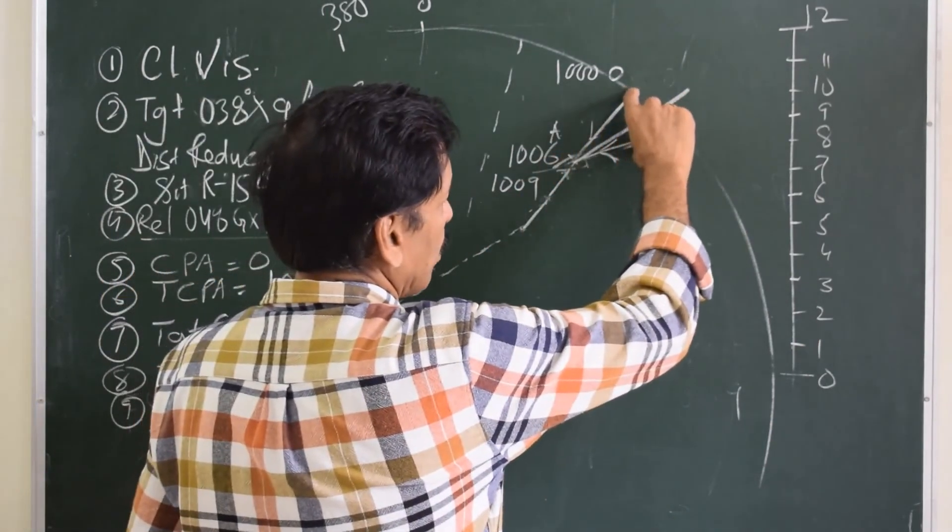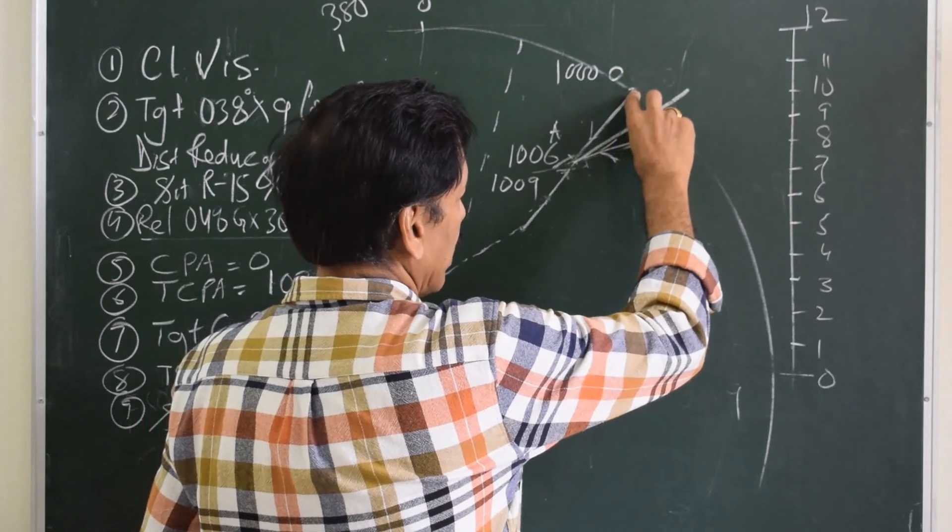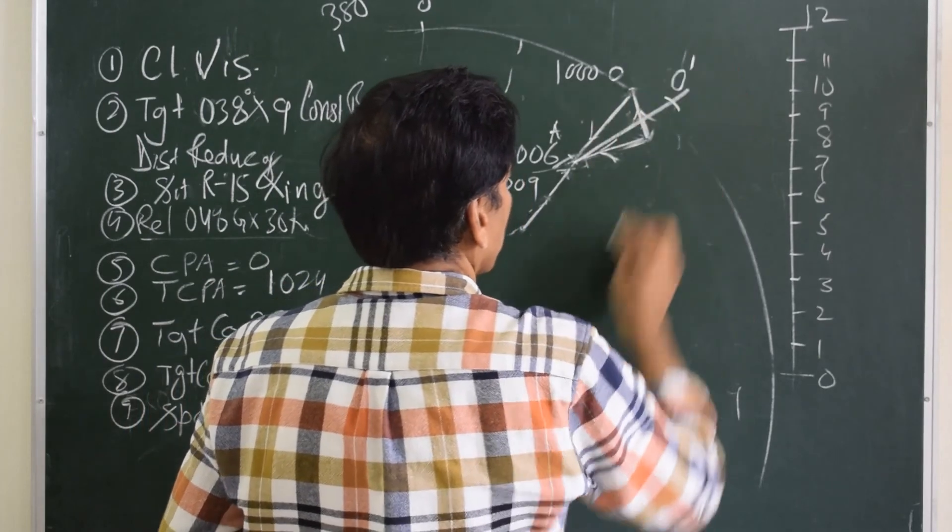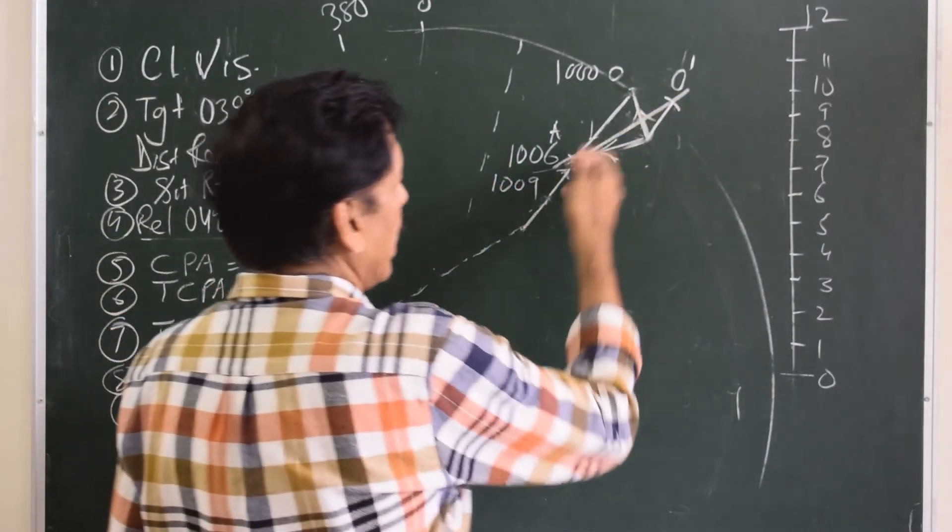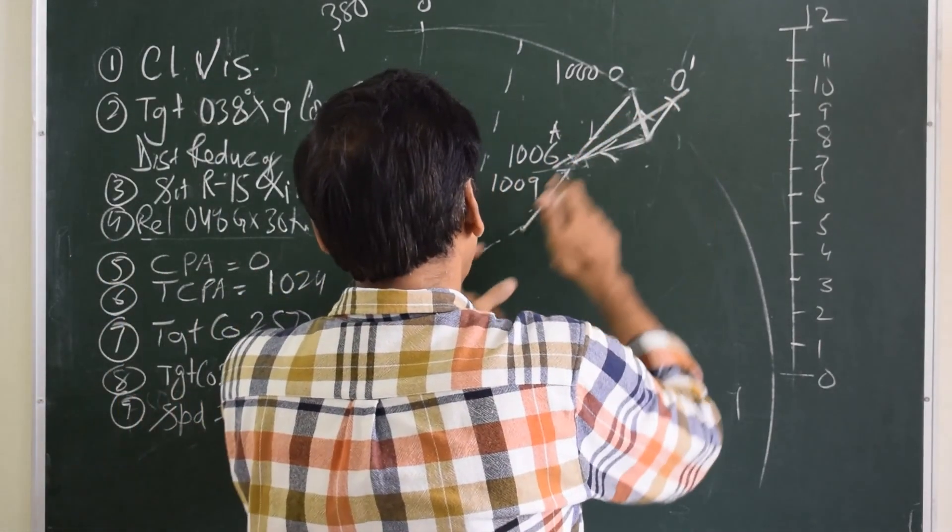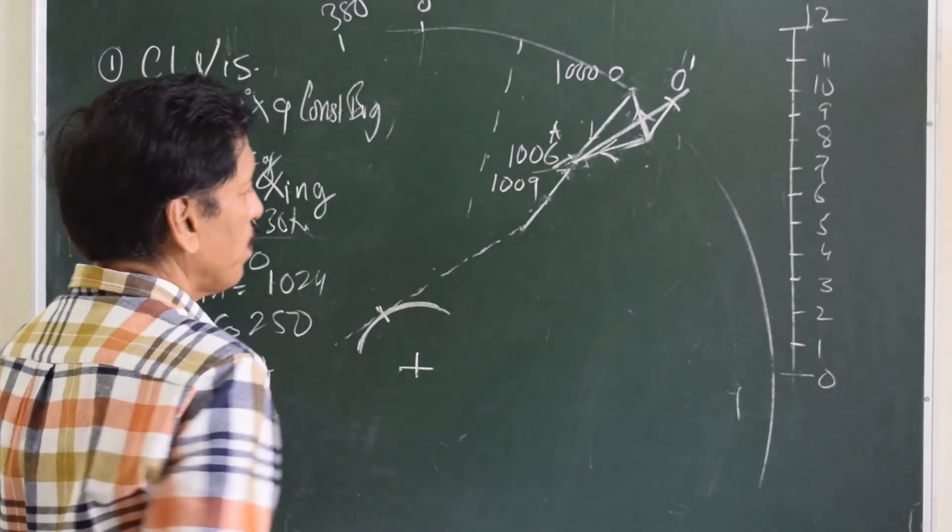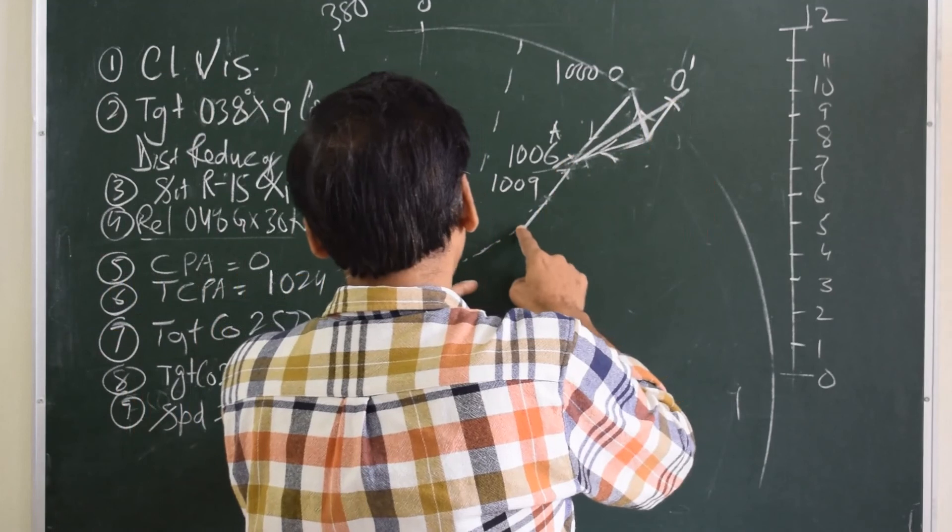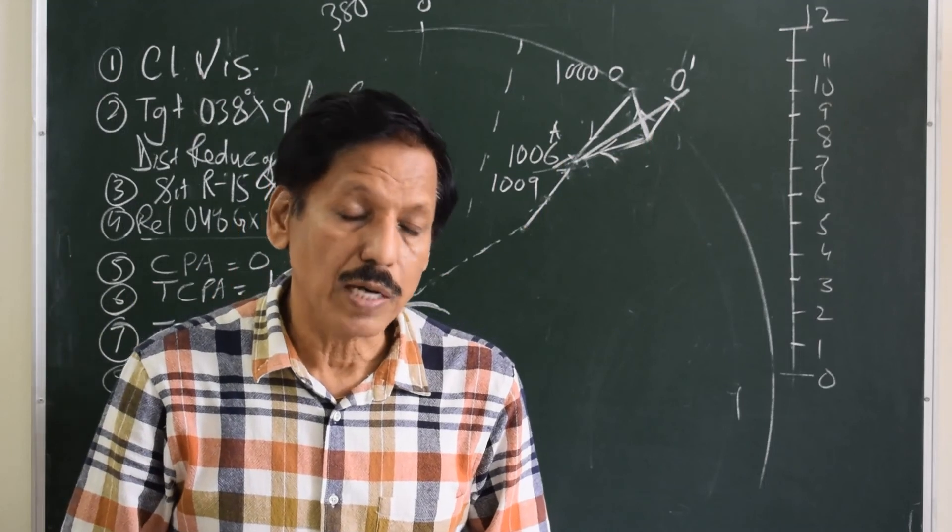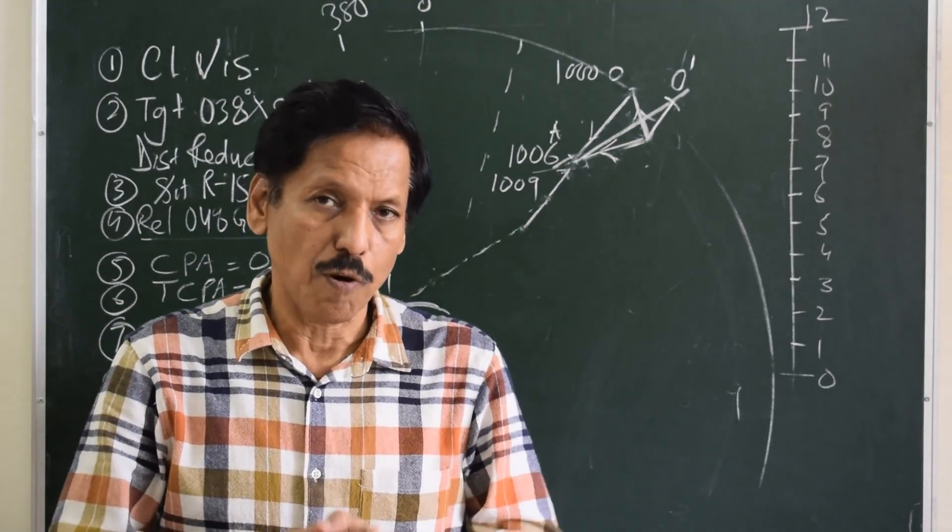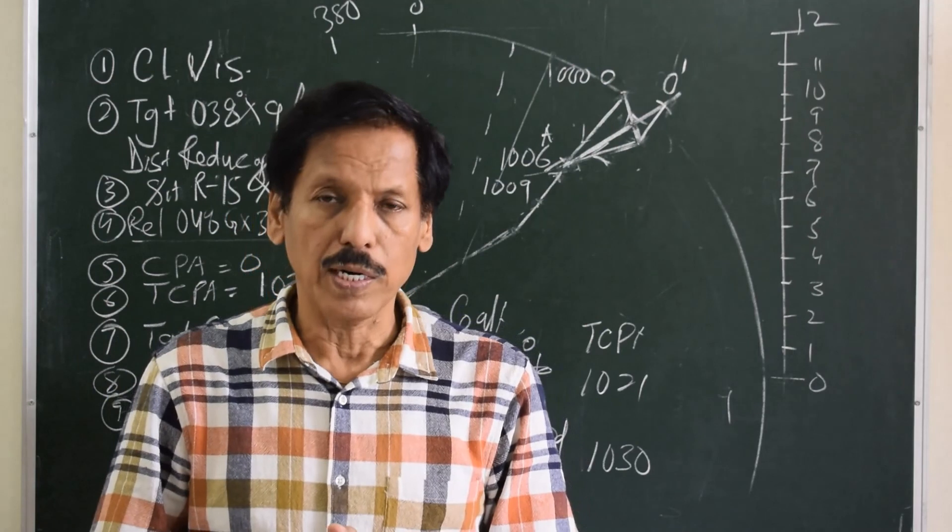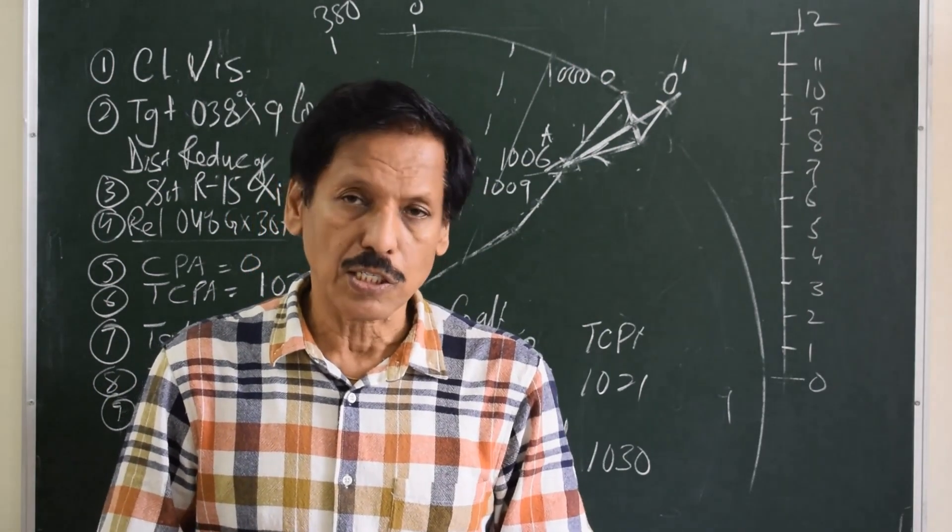Rest of the action is similar. With WO as radius, I draw an arc cutting the relative line at O dash. O dash A is the new relative speed. So we can find out if this much distance is travelled in 6 minutes, then when is the CPA going to be. At this rate, what time will be the new CPA? So probably after about 10 minutes. Similarly, we can find out as to what should be the speed, assuming that there is a performance delay of 6 minutes. So this was a plotting to explain what is the alteration of the course required or reduction of the speed required, assuming that there is a performance delay of 6 minutes.